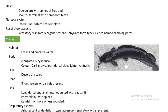The next example is Clarius. Its habitat is both fresh and brackish water. The body is elongated and cylindrical in shape. The color is dark gray on the dorsal side, becoming lighter on the ventral side. The skin is devoid of any scales. The head has eight long feelers or barbels. The dorsal fin and anal fin are both very long.